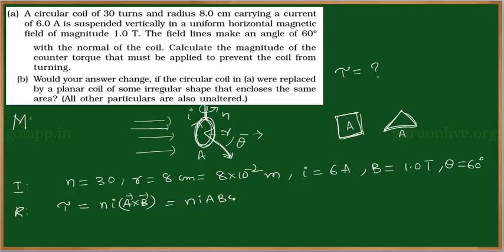That is equal to: n is 30, I is 6, and A—it is a circular coil, so area of circular coil is pi r squared—so pi into r is 8 into 10 to the power of minus 2, whole squared, into B is 1, into sin 60 degrees. We know that sin 60 is root 3 by 2.